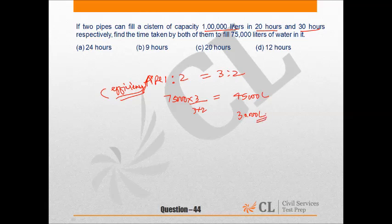If pipe 1 fills 1 lakh liters in 20 hours, then for filling 45,000 liters it will take 20 × 45/100, which equals 9 hours.